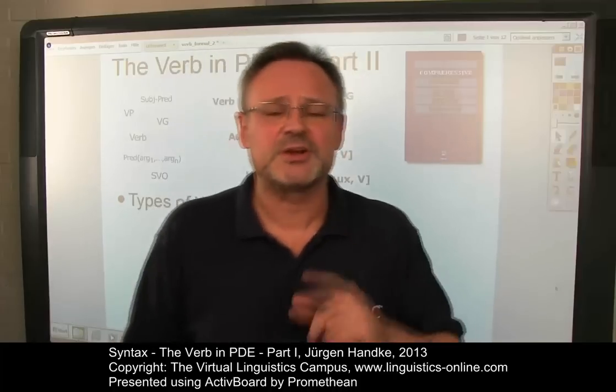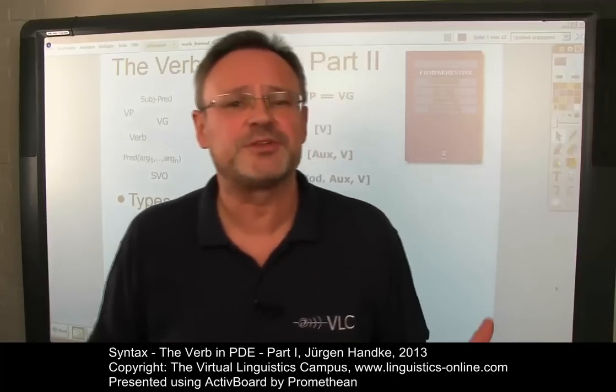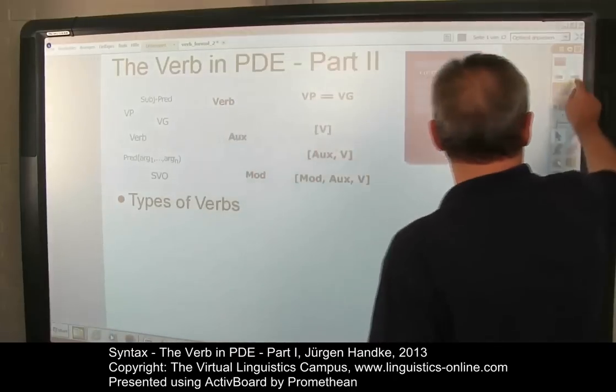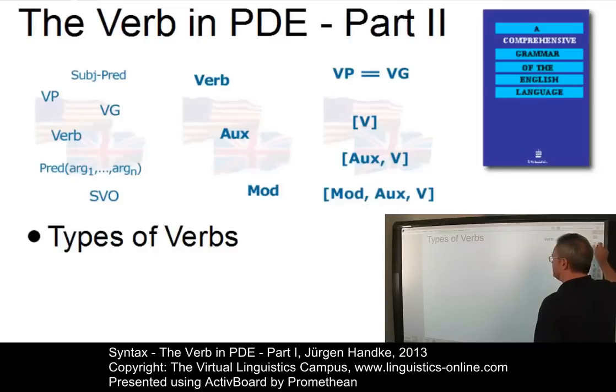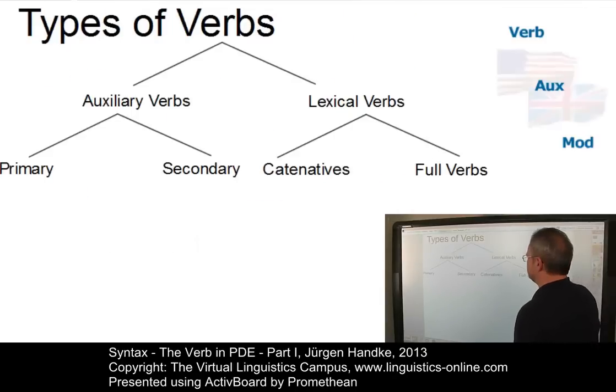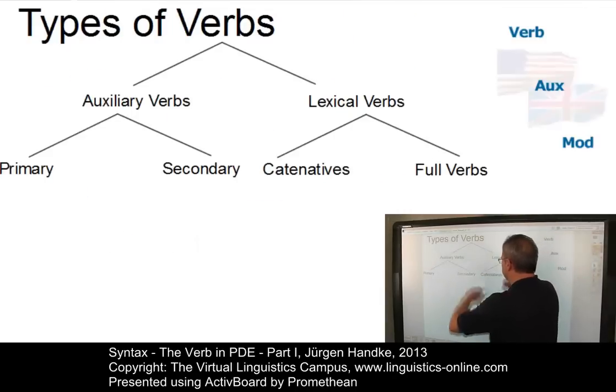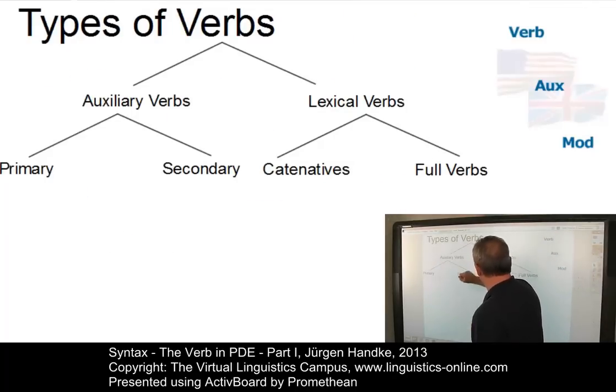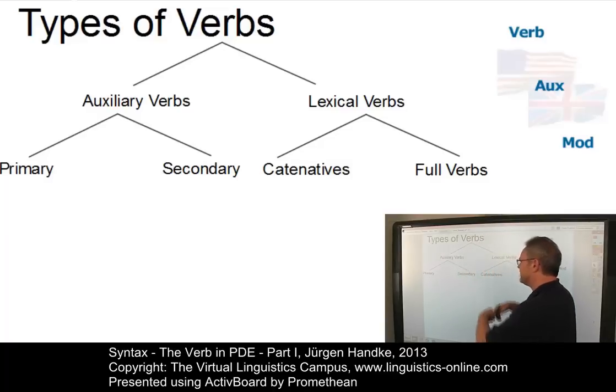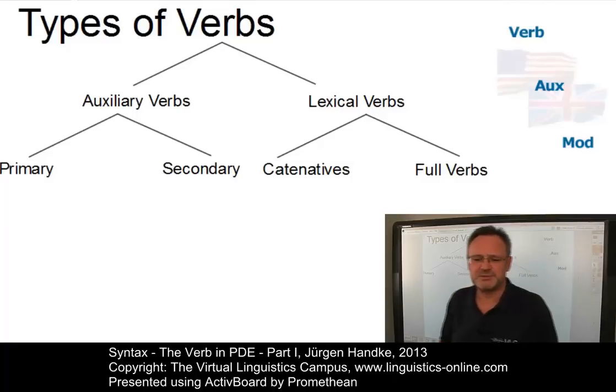Welcome back. Having outlined the general structure of the verb group in the verb in present day English part 1, let us now take a closer look at the classification of the types of verbs within the verb group. Generally, we can draw the following subdivision. We can subdivide the verbs into auxiliary verbs and lexical verbs on the one hand, and then we have further subdivisions.